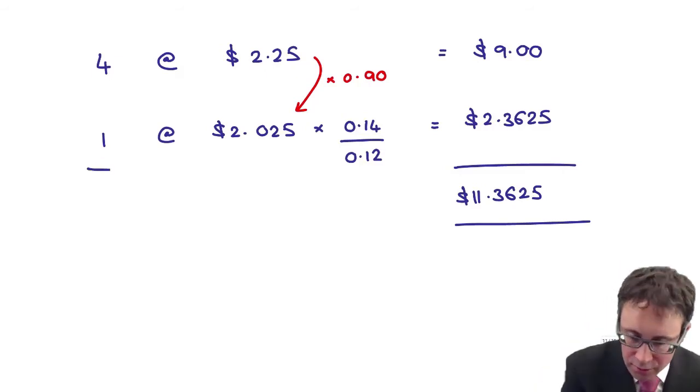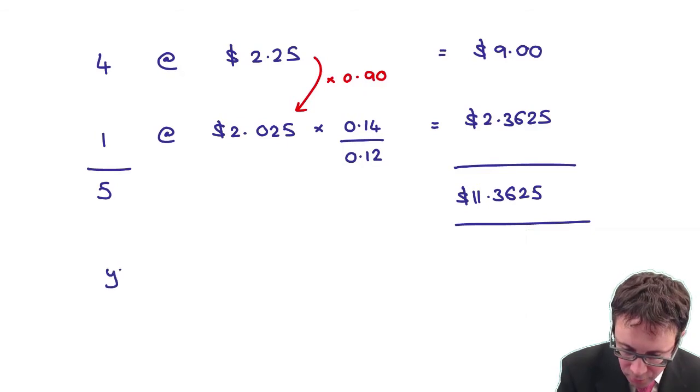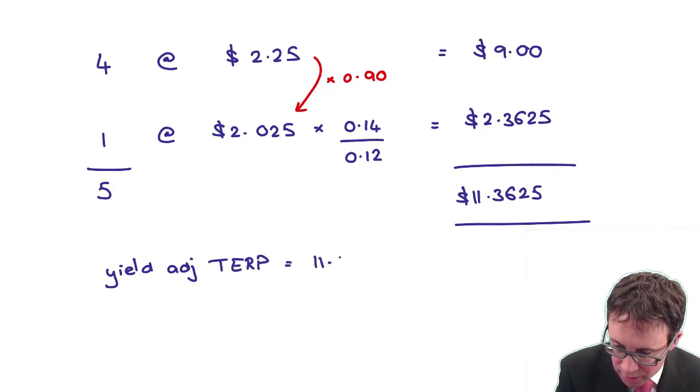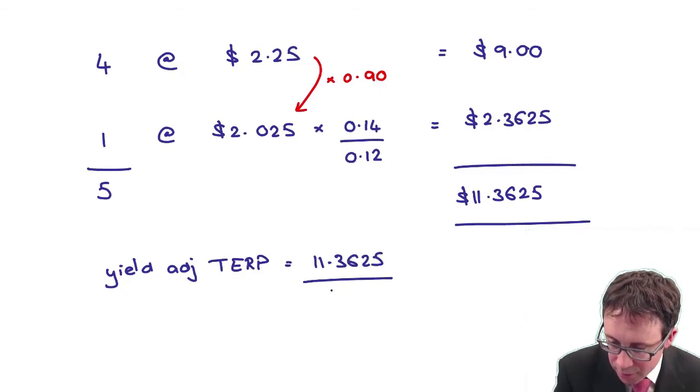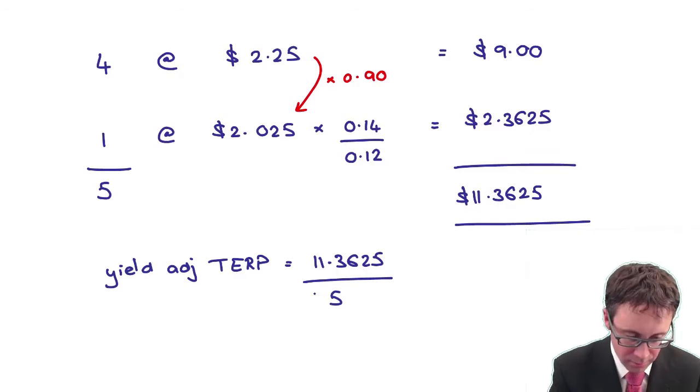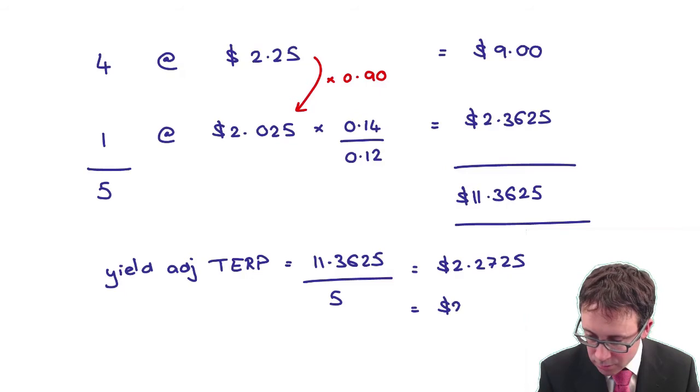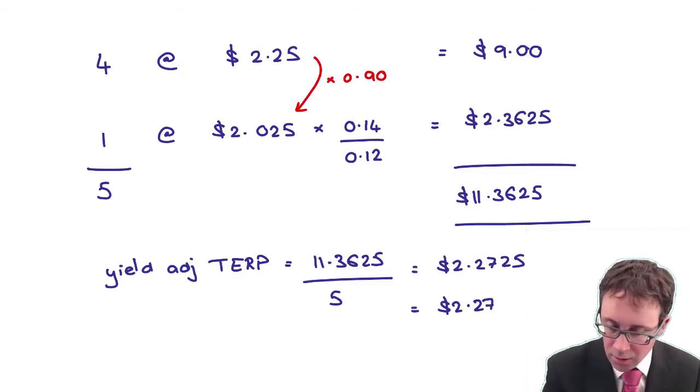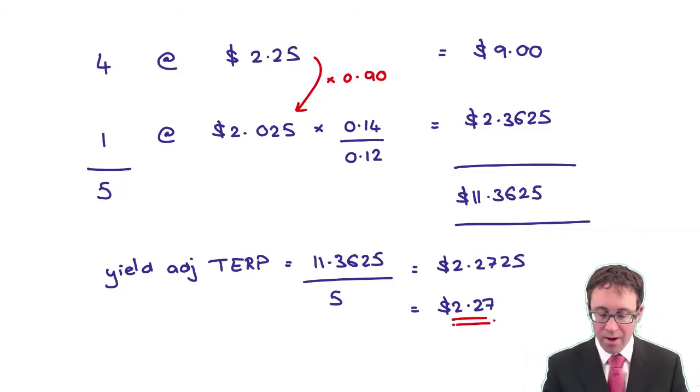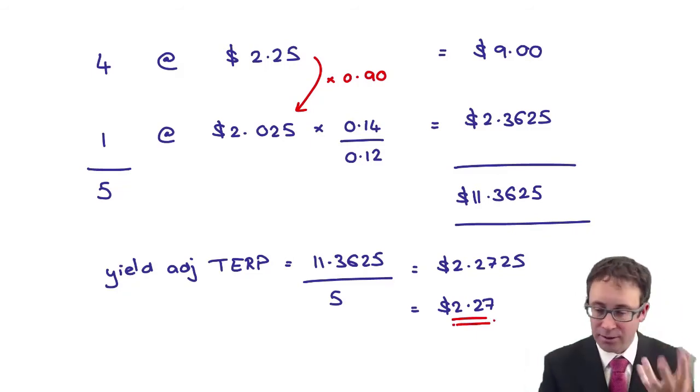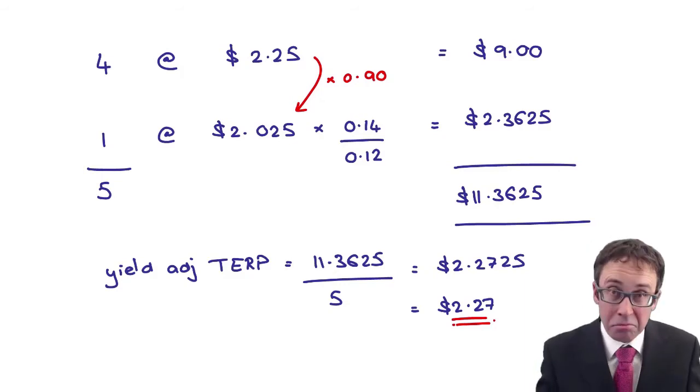But that goes through there and gives you $11.3625. How many shares have we got? That's five. So if we're looking there for my yield-adjusted theoretical ex-rights price, it's the 11.3625 divided by five, which gives me $2.2725, which is $2.27 if we round it down. $2.27 or $2.28, hotel motel, who cares? Happy with that?